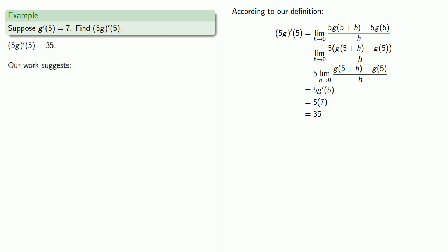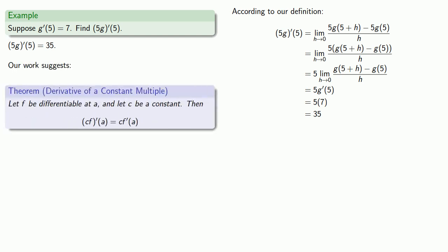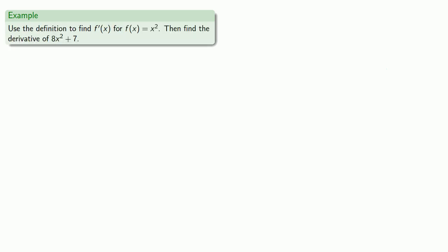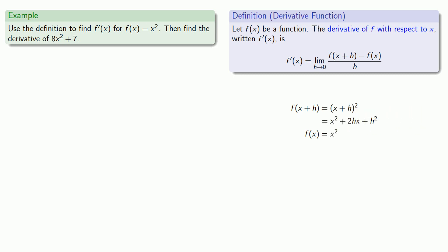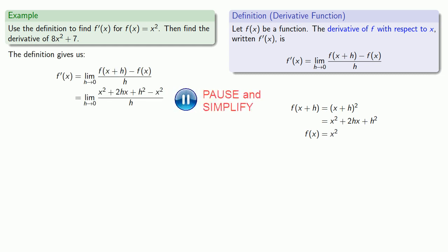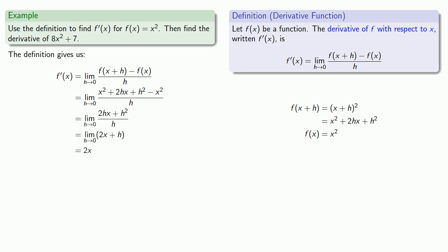This suggests another important theorem: let f be differentiable at a and let c be a constant; then the derivative of c·f is equal to c times the derivative of f. Now let's put a few things together. Since the problem asks us to find the derivative using the definition, we find f(x+h) and f(x), substitute into the definition, do a little algebra, and find the derivative of x² is equal to 2x.